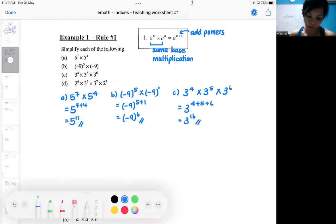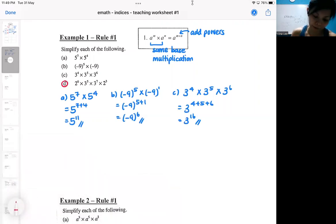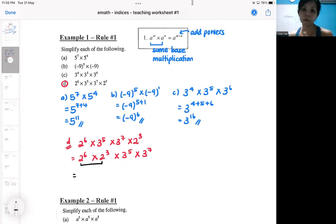But what if you come to a question where you seem to have two different bases? When you've got two different bases, you group the same base together and apply the same base multiplication on those who have the same base. So here I got a base two and I got a base three.